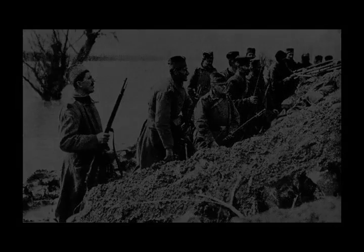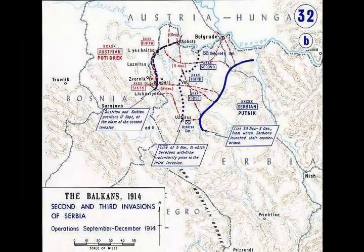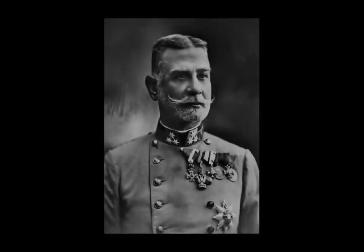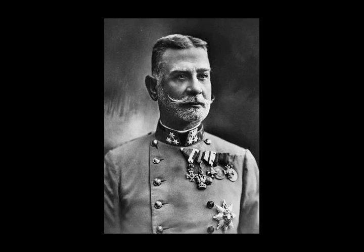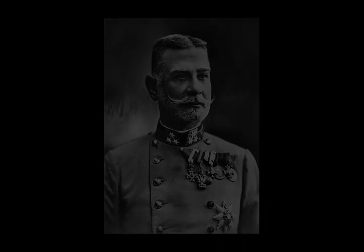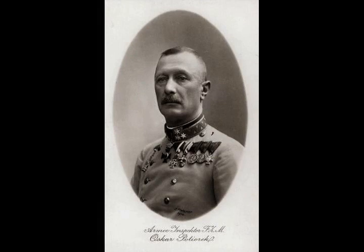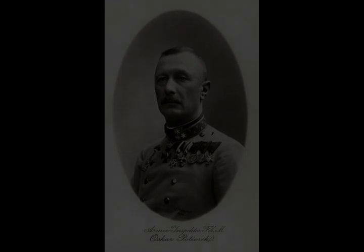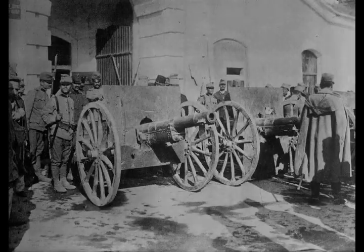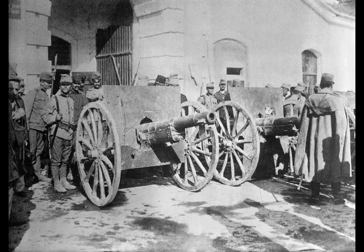Potiorek appeared confident: 'Soldiers of the Fifth and Sixth Armies,' he said, 'the goal of this war is nearly attained — the complete destruction of the enemy. The three-month campaign is almost over; we must only break the enemy's last resistance before the onset of winter.' The Serbs were exhausted and demoralized. In a telegram to Putnik dated 27 October 1914, Stepanovic complained that the Second Army did not have enough shells to resist the Austro-Hungarians effectively and requested that he be removed from his command.